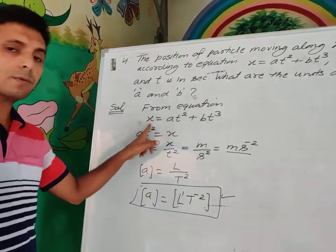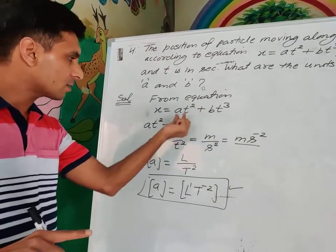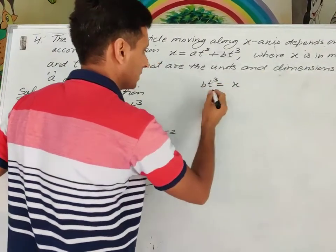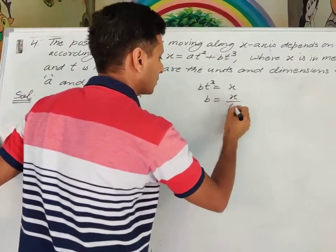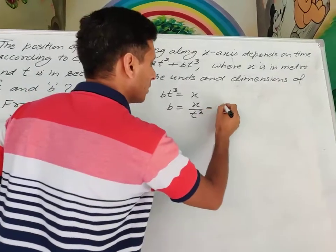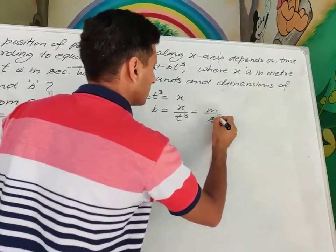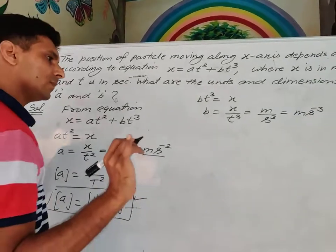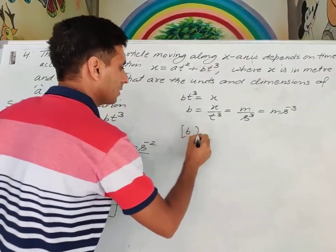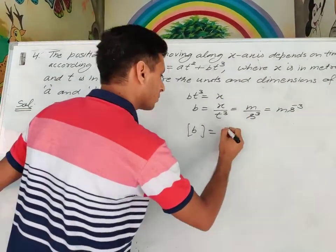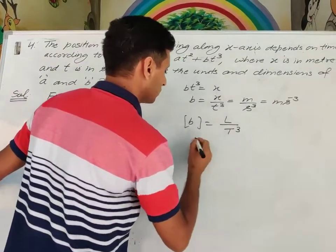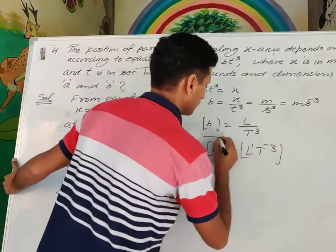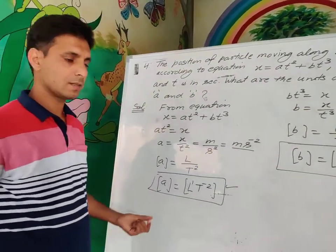For B: Bt³ = x, so B = x/t³ = meters/second³ = m/s³. The dimensions of B are L¹T⁻³.